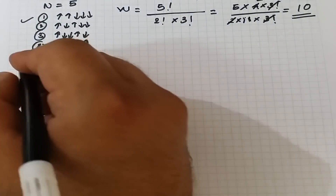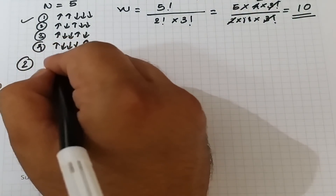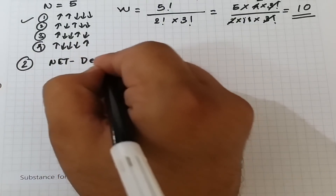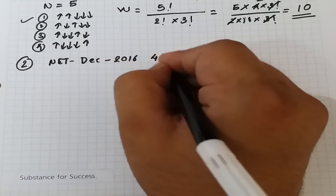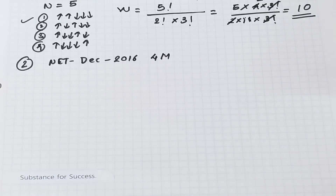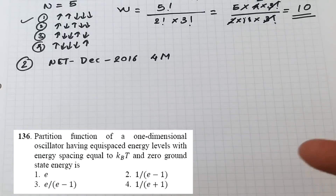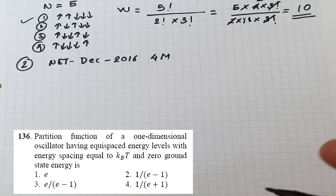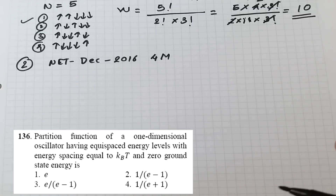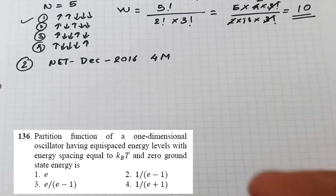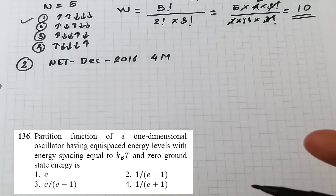The second problem is also from CSIR NET December 2016, asked for four marks. It is based on the partition function. The problem states: the partition function of a one-dimensional oscillator having equispaced energy levels with energy spacing equal to k_BT and zero ground state energy is — find its value.